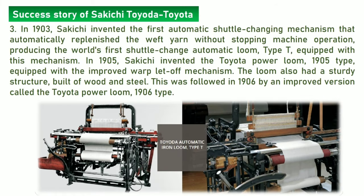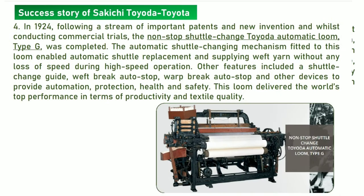In 1903, Sakichi invented the first automatic shuttle-changing mechanism that automatically replaced the weft yarn without stopping machine operation, producing the world's first shuttle-change automatic loom Type T equipped with this mechanism. In 1924, the non-stop shuttle-change Toyota automatic loom Type G was completed. The automatic shuttle-changing mechanism fitted to this loom enabled automatic shuttle replacement and supplying weft yarn without any loss of speed during high-speed operation.